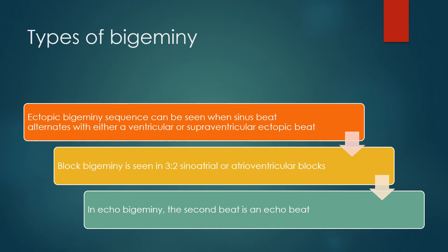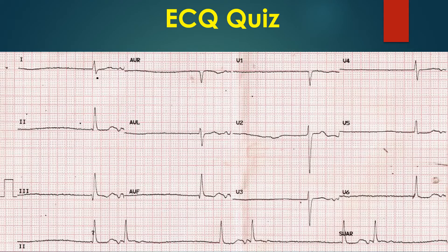Ectopic bigeminy can be seen when a sinus beat alternates with either a ventricular or supraventricular ectopic beat. Block bigeminy is seen in 3:2 sinoatrial or atrioventricular blocks. In echo bigeminy, the second beat is an echo beat. Here is another ECG with a bigeminal rhythm — what is the diagnosis?